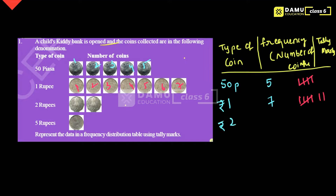Next one is 2 rupee. How many are there? Just 2. The tally marks for this is 2. Then 5 rupee — what is that? For 5 rupee, only 1 coin is there, so the tally mark is also 1. So these are the denominations, these are the tally marks, and this is the frequency for each.